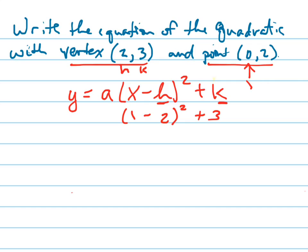Now I also have x and y for a specific point, so x is 0, y is 2, and now I can solve for a.